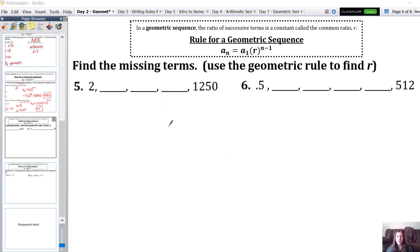Continuing with geometric sequences, here we need to find the missing terms and fill in those blanks. Our first term is 2, the last term that we know about is 1250. First we need to figure out what r is, and then we'll multiply each time to fill in those blanks.